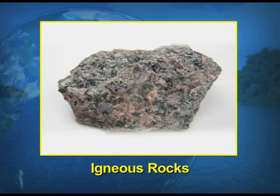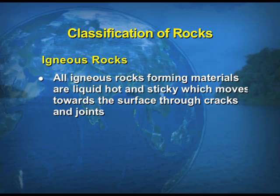Generally, the igneous rock is formed due to the cooling and solidification of the magma. All the igneous rock-forming materials are liquid, hot, and sticky, which move towards the surface through cracks and joints. In the interior of the earth the temperature is quite high, so the magma is in liquid form and keeps moving wherever it finds its way, either through cracks or through weak rocks.